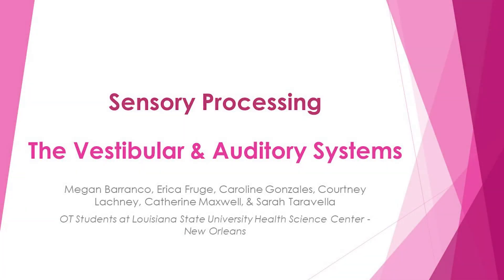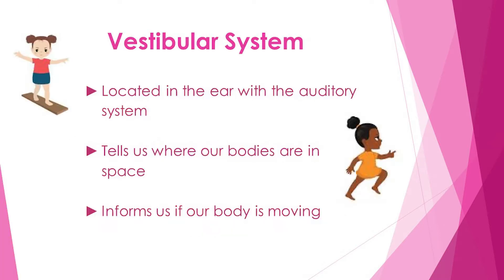In this video, we will focus on the vestibular and auditory systems as they relate to sensory processing. The vestibular system is located in the ear and plays an essential role in the relationship between our bodies, gravity, and the entire world. It also helps to identify where our bodies are in space.